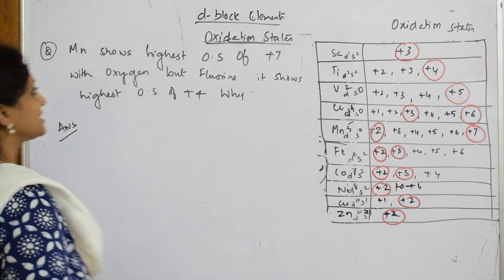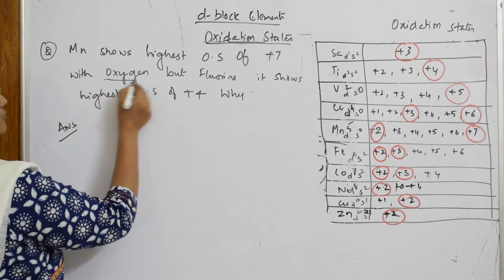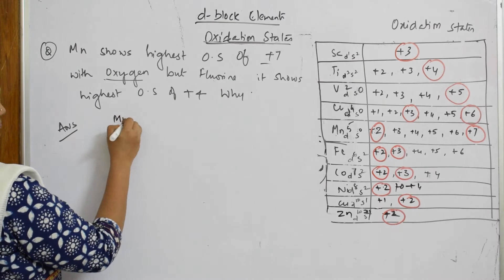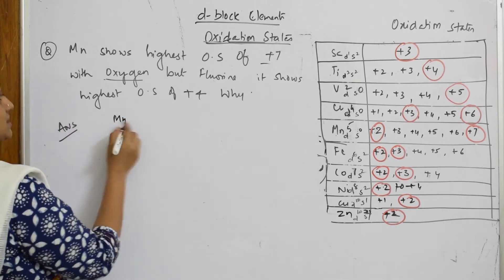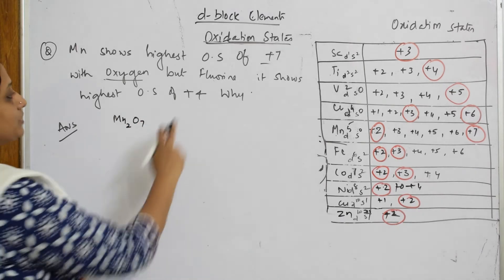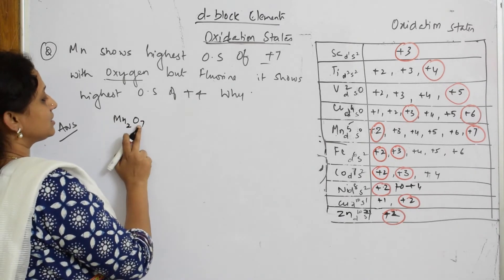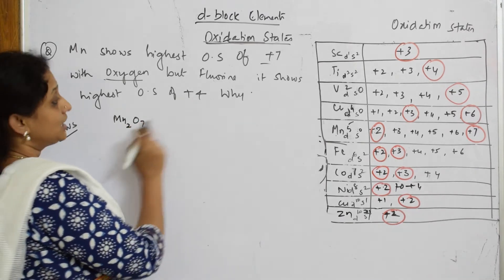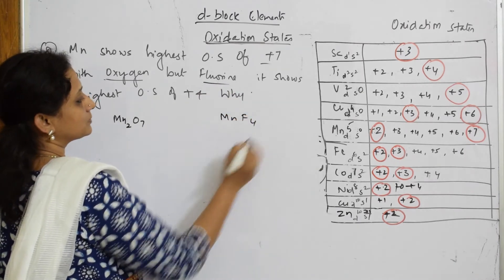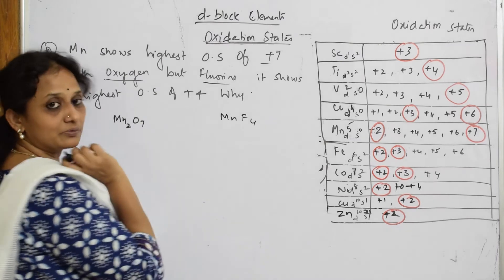Let us see. The compound formed with oxygen with plus seven oxidation state is Mn2O7, and with fluorine the compound formed is MnF4, where manganese has plus four oxidation state. Now let us see what's happening in Mn2O7.